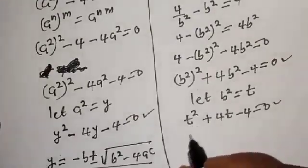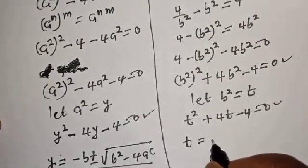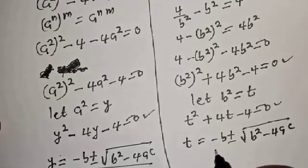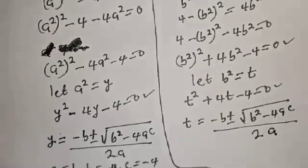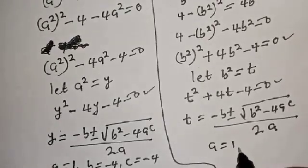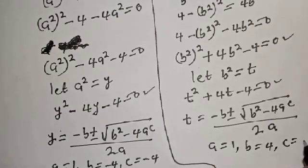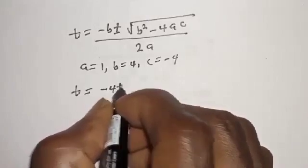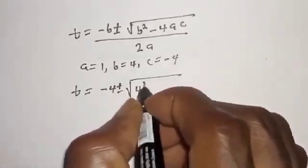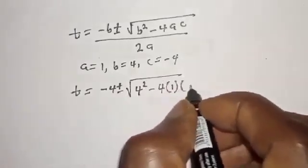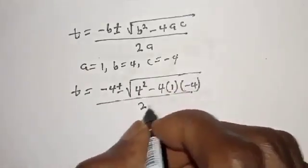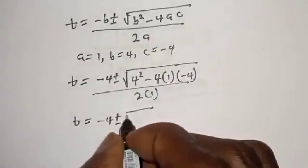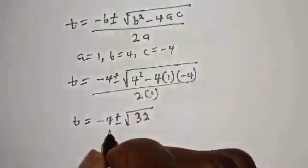The quadratic formula gives t equals minus b plus or minus square root of b squared minus 4ac over 2a, where a equals 1, b equals 4, and c equals minus 4. So t equals minus 4 plus or minus square root of 4 squared minus 4 times 1 times (minus 4), over 2 times 1.